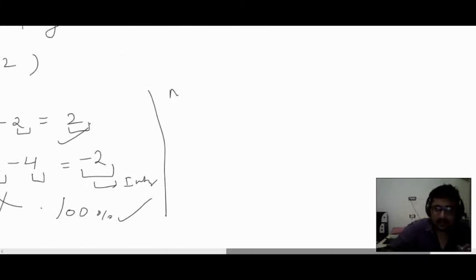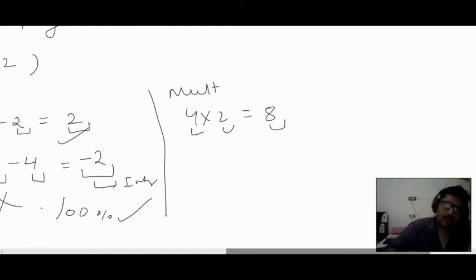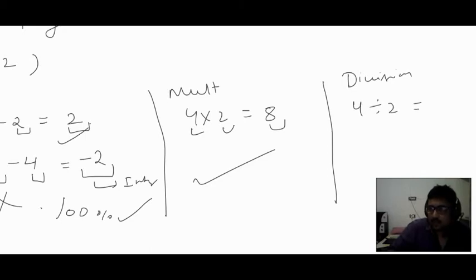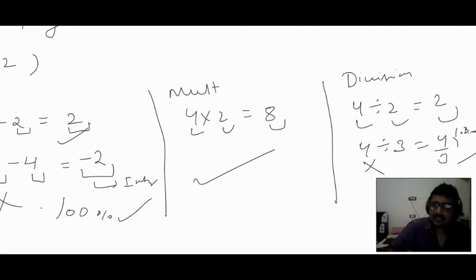Now multiplication: 4 into 2 equals 8, which is a natural number — so multiplication satisfies closure property. For division: 4 divided by 3 gives 1.333... something, which is not a natural number. So division does not satisfy closure property for natural numbers.